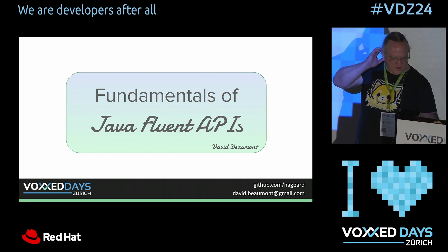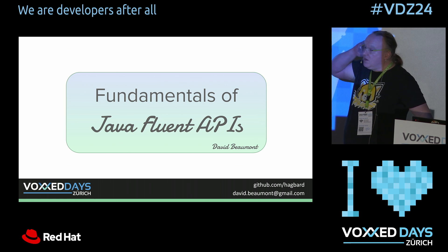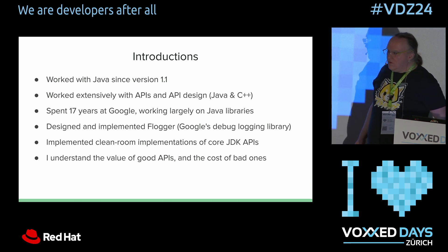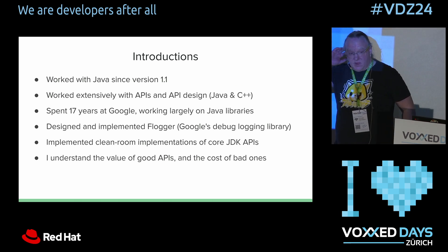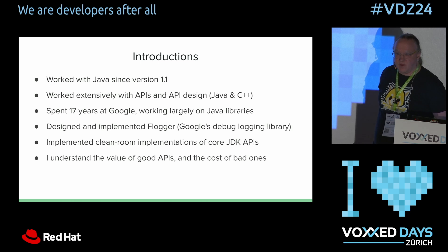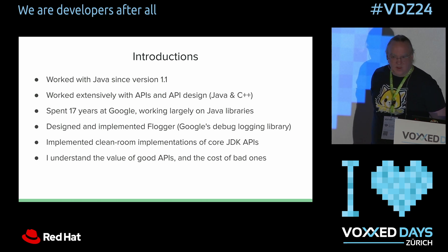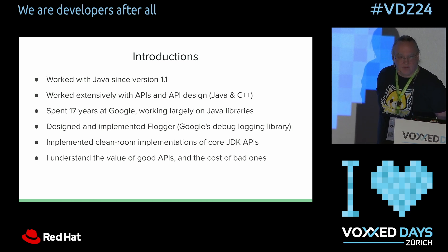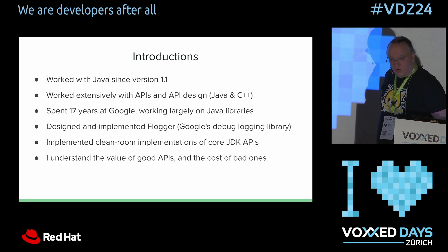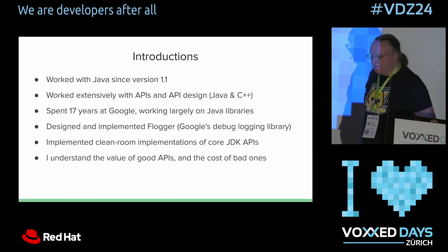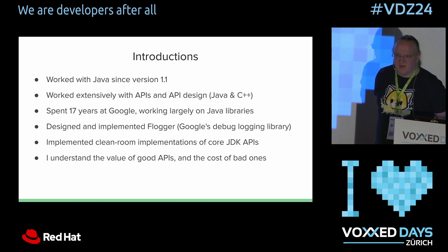My name's David Beaumont and I'm going to talk today about the fundamentals of Java Fluent APIs. I've worked with Java for a very long time and worked a long time at Google with the Core Java Libraries team and on many libraries, both internal and open source. I designed and implemented Flogger, which is a fluent Java logging library, and before Google, I implemented cleanroom versions of Core JDK APIs.